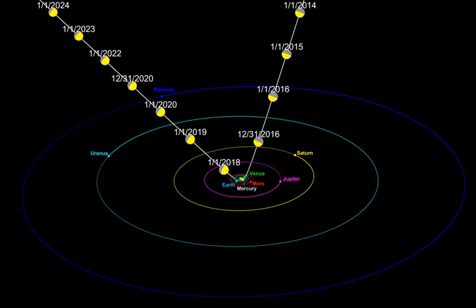An interstellar object is a body, other than a star or substar, that is located in interstellar space and is not gravitationally bound to a star. The term can also be applied to objects that are on an interstellar trajectory but are temporarily passing close to a star, such as certain asteroids and comets.